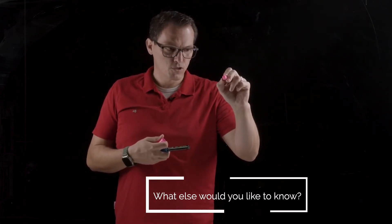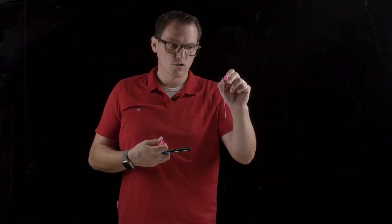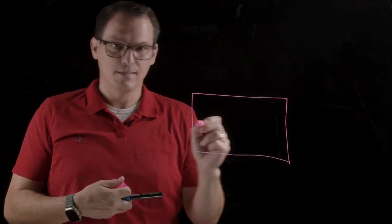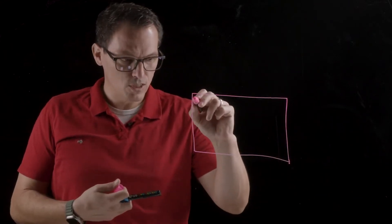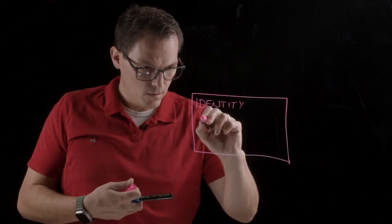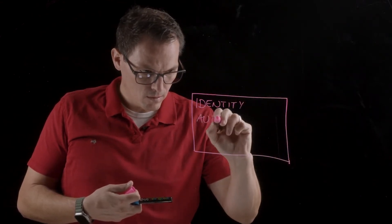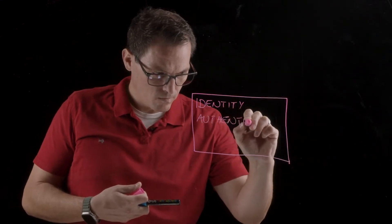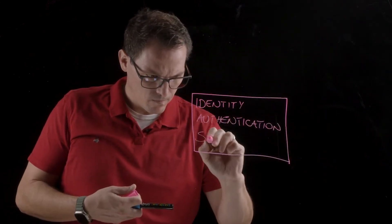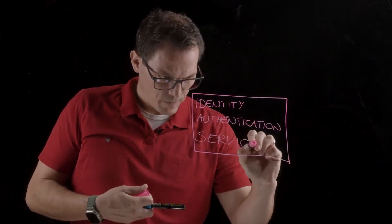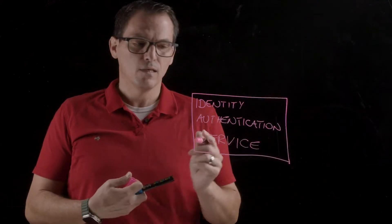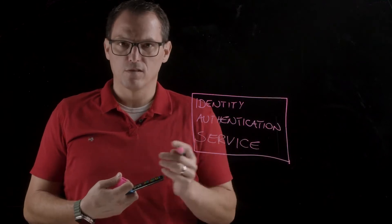So, Identity Authentication Service is provided to you by SAP, so you cannot or you shouldn't instantiate it on your own. And you have something called a tenant, so you have an IAS, which is the Identity Authentication Service. And you will also hear quite often about the Identity Authentication tenant, which is more or less just the instance of the service itself.